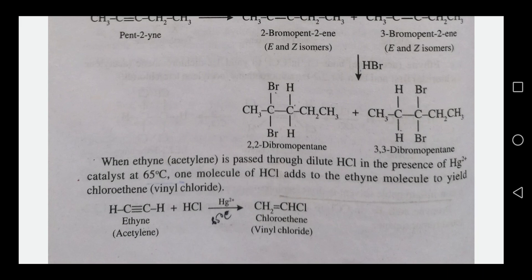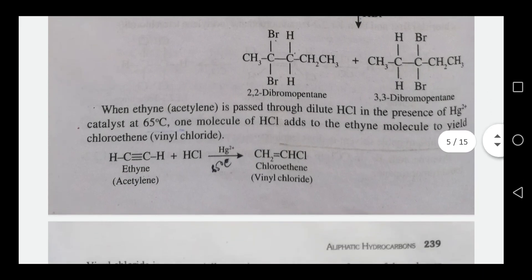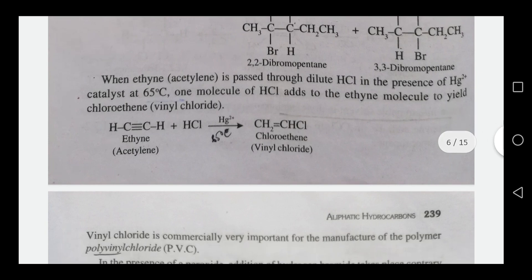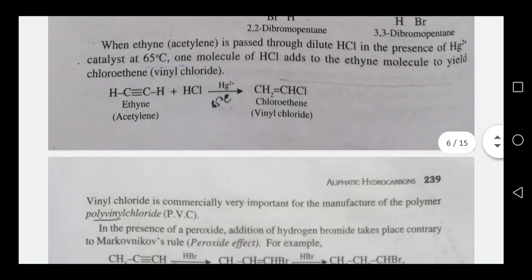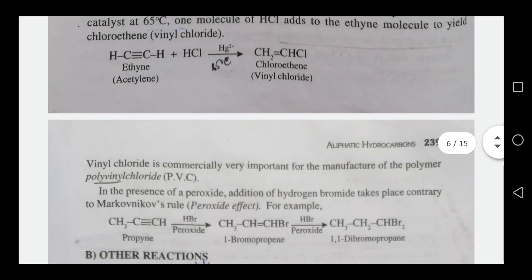This reaction uses a mercury catalyst at 65 degrees Celsius. The reaction produces vinyl chloride. This reaction is important in the preparation of vinyl chloride.